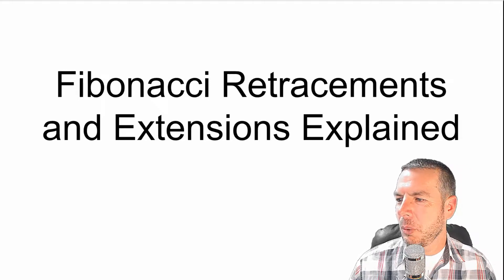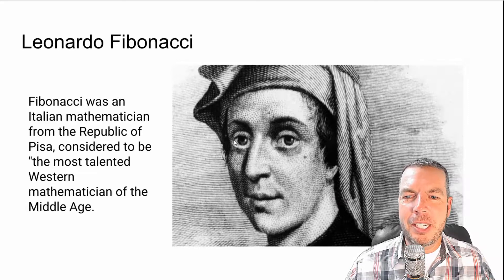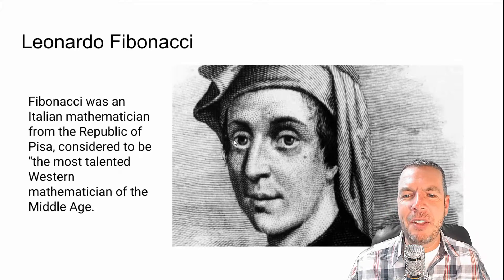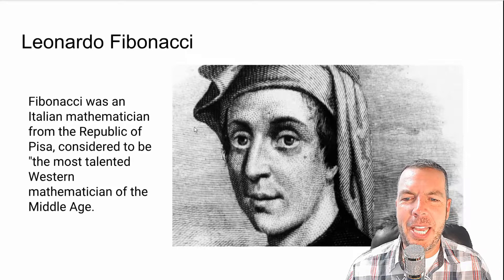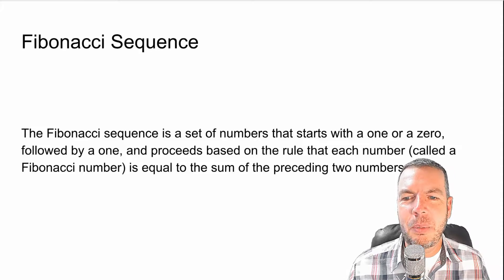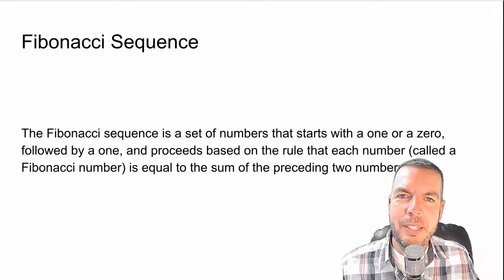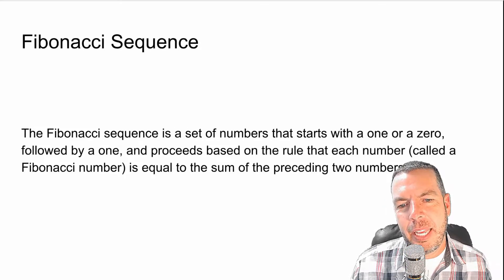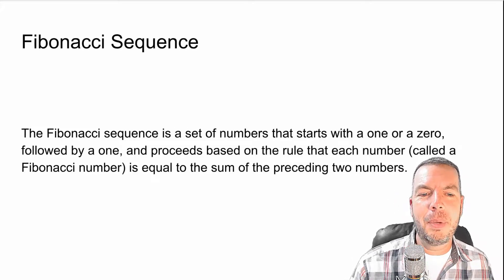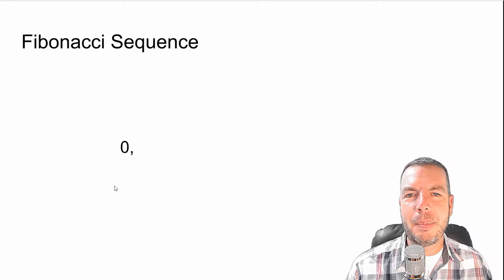This is a really cool concept and I wanted to get right into it. Leonardo Fibonacci was an Italian mathematician from the Republic of Pisa, considered to be the most talented western mathematician of the Middle Ages. He came up with this sequence called the Fibonacci sequence. The Fibonacci sequence is a set of numbers that starts with a zero or a one followed by a one, and proceeds based on the rule that each number is equal to the sum of the preceding two numbers.